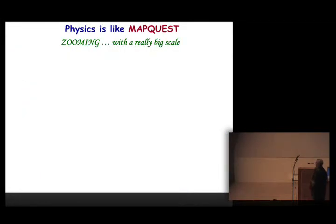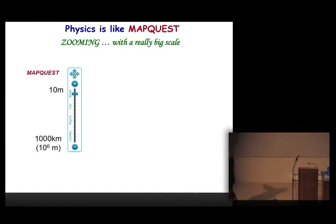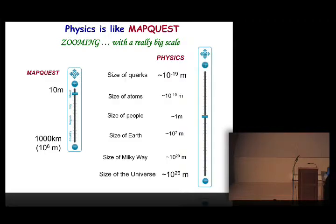So in fact, physics is just like MapQuest. What we do in physics is we zoom. We zoom in, we zoom out, we zoom around, and what we do it, but we do it with a very, very big scale. So in MapQuest, the scale goes from sort of 10 meters to maybe a thousand kilometers, the size of the United States or something, about five orders of magnitude. In the physics scale, we go something like 45 orders of magnitude, from the smallest things we know inside quarks, all the way to the enormous size of the universe, and everything in between.